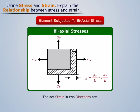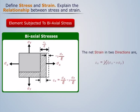The strain in the element in both directions is produced due to the Poisson's ratio effect, which is expressed as [formula shown]. Therefore, the net strain in x and y direction is expressed as [formula shown].